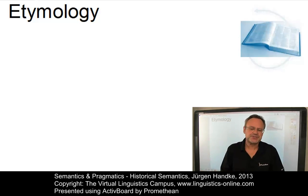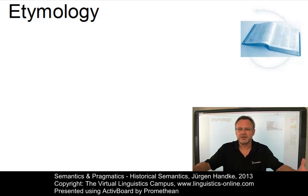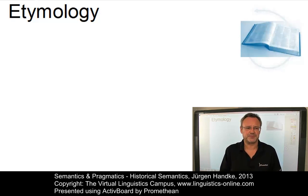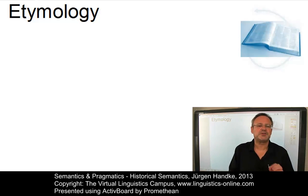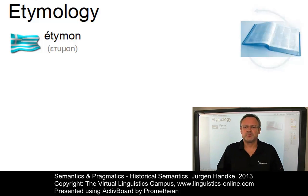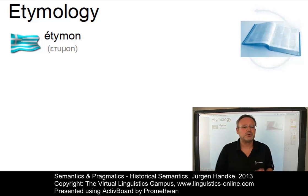Etymology is the study of the origins and histories of individual words, and also the name given to the history of a particular word. Such information, for example the information about the etymology of a word such as 'table', is recorded and presented in standard dictionaries but also in specialized etymological dictionaries. The first part of the term etymology comes from Greek 'etymon', which means the true sense of a word, making the search for the true, that is, the original forms of words a major concern of etymological studies.